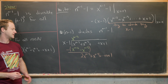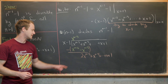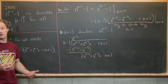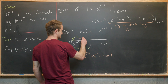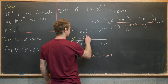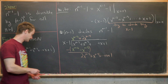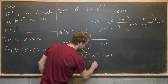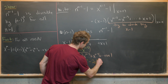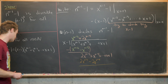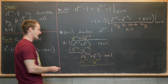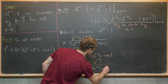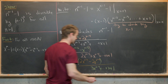Next, we multiply by 2x to the n minus 4 to cancel out the largest exponent term remaining. That gives us 2 times x to the n minus 3 minus 2 times x to the n minus 4. Doing that subtraction, we are left with 3 times x to the n minus 4, plus all the way down to x plus 1.